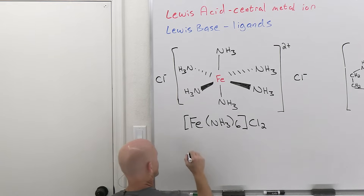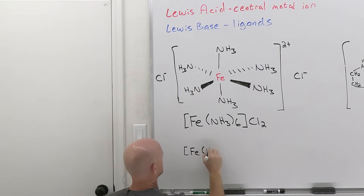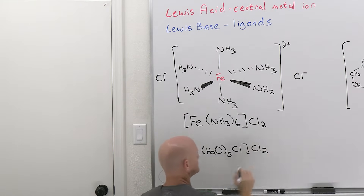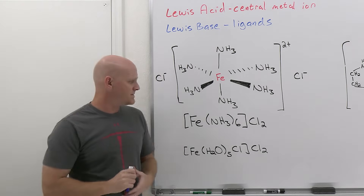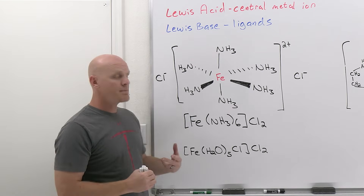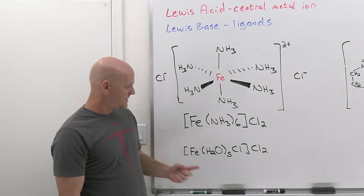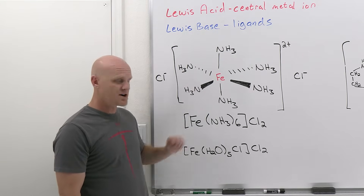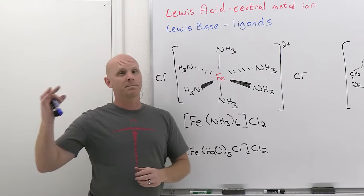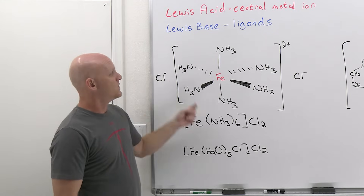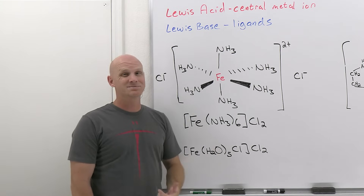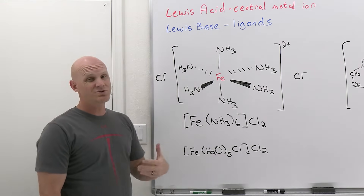Let's say we had something a little different — a formula with water as a ligand. Most ligands are going to have a negative charge, but not all of them. The two most prominent neutral ones are ammonia and water. We call ammonia 'amine' and water 'aqua' in this context. A lot of students get confused because we're used to ionic bonding with cations and anions. The central metal ion is definitely a cation, but the ligands around it — while often anions — don't have to be. With water and ammonia, those are neutral molecules.